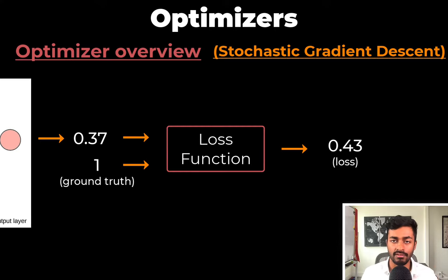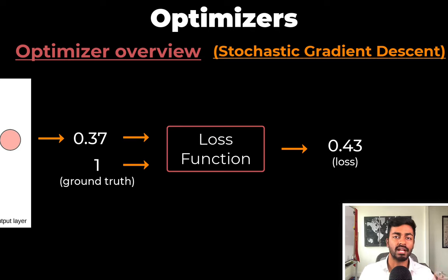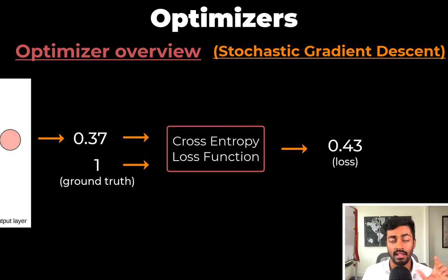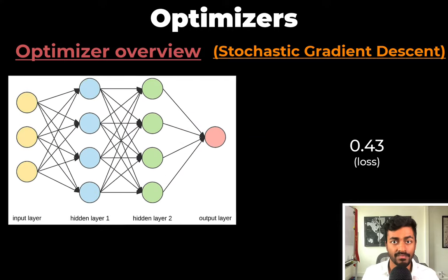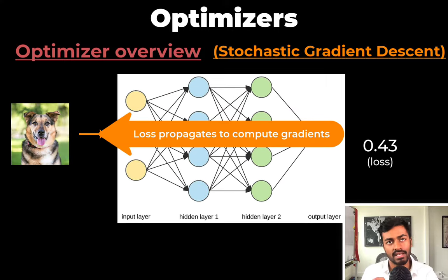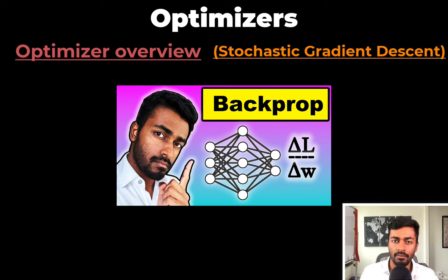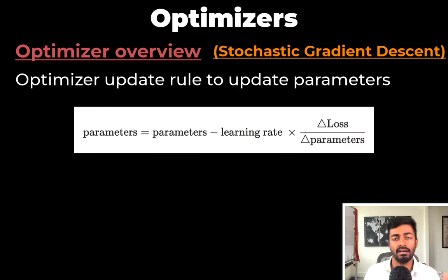We compare this prediction to the ground truth, which is going to be one since it's a dog. We pass both the prediction and the ground truth into a loss function to generate a loss. For this classification task, this loss function could be a cross-entropy loss. We then take this loss and back-propagate it through the network in order to compute the gradient of the loss with respect to the individual parameters. For more details on this back-propagation process, check out the linked video on back-propagation.